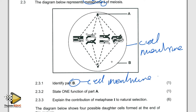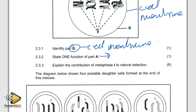State one function of structure A. The function of A is the production of spindle fibers, which are used to hold the chromosomes in their position.